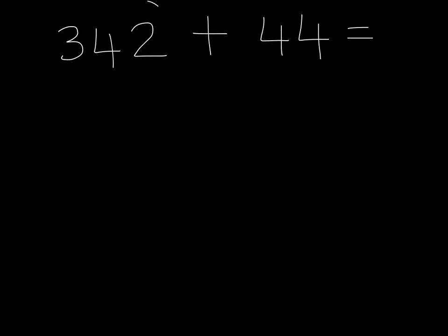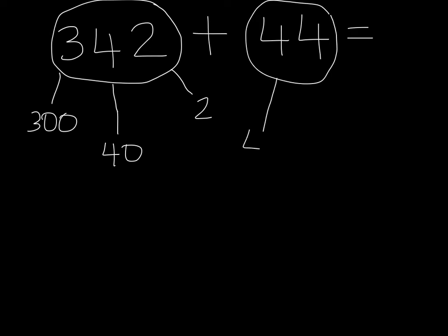So we take this number here, 342. I've got three lines because it's got 300, so 300, 40, and a 2. This number here, when we expand it, is made up of a 40 and a 4. Now remember, when we have no hundreds in the other one, we don't need to add anything onto it. It's 300 plus 0.